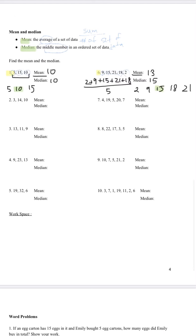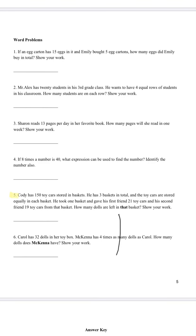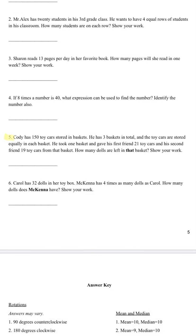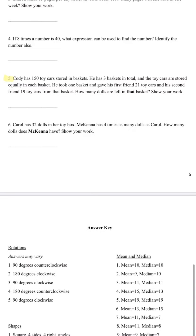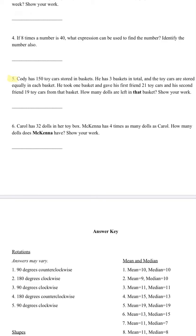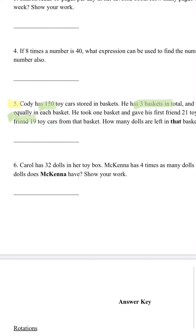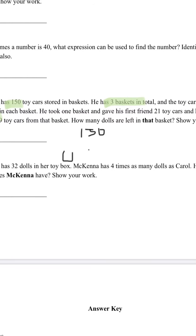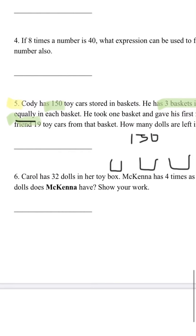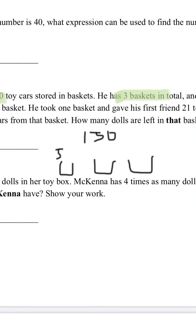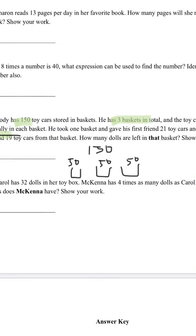Go ahead and work on it, then let's move on to word problems. I picked number five because it was the longest. It says Cody has 150 toy cards stored in baskets. He has three baskets in total and the toy cards are stored equally in each basket, meaning there are 50 cards in each basket.